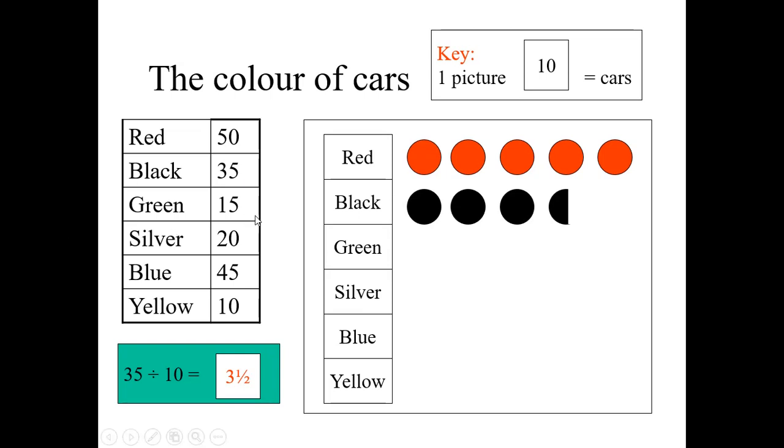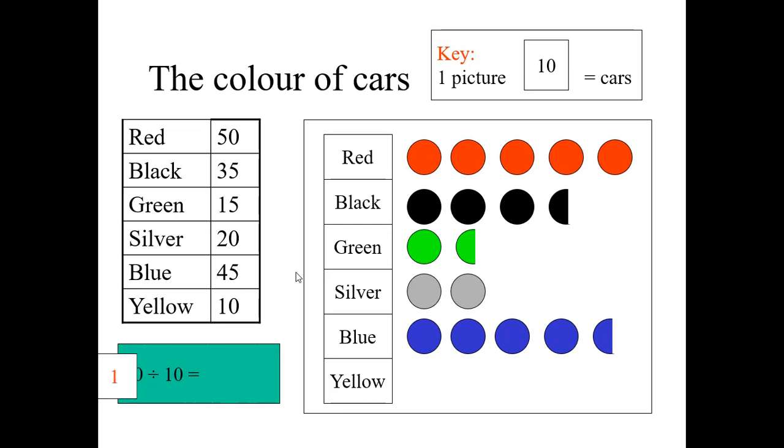How many green are here? Now, you draw 15. 1 and a half. 20. 1 and a half, green. Silver, 20, 2. Blue, 45, 4 and a half. And yellow, 10, 1.